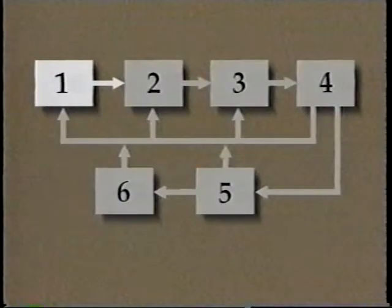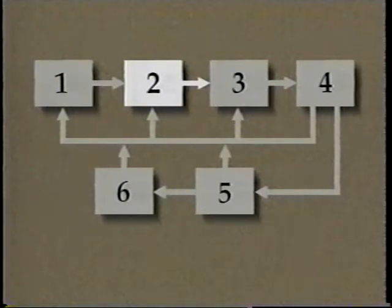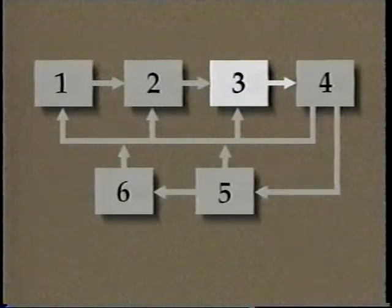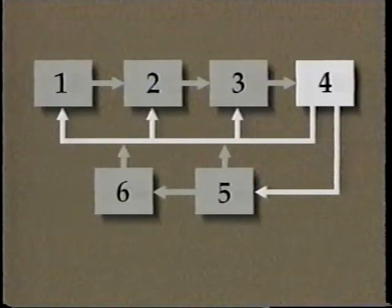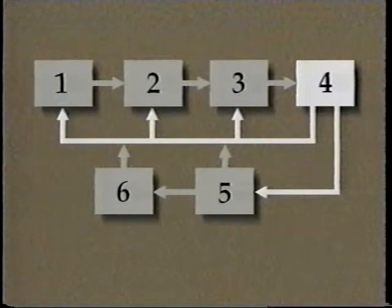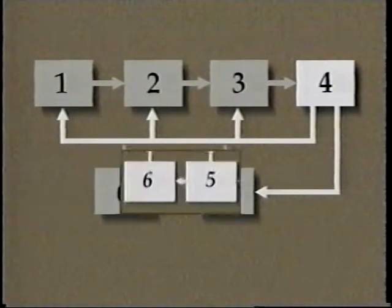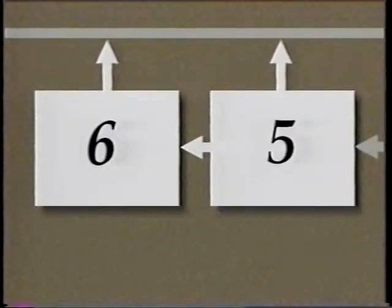In the previous programs of this series, we followed Bill as he learned about the system's first four phases: Phase 1, Identifying Safety Problems; Phase 2, Identifying Alternative Improvements; Phase 3, Evaluating Alternatives and Selecting Improvements; and Phase 4, Developing and Implementing the Highway Safety Improvement Program. In this program, Bill will work his way through the last two phases — evaluating each safety improvement project and evaluating the overall safety program.